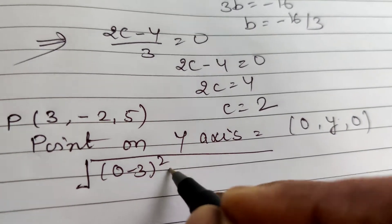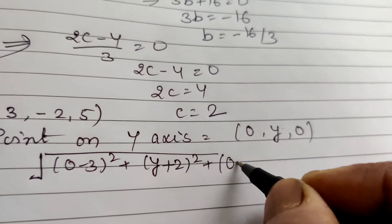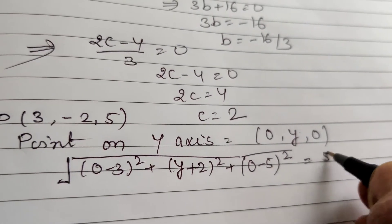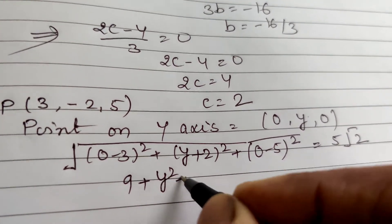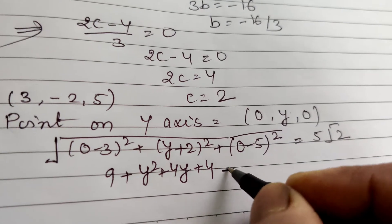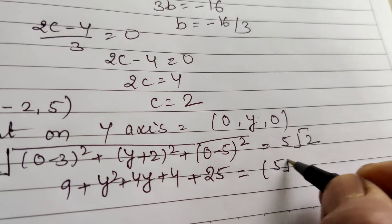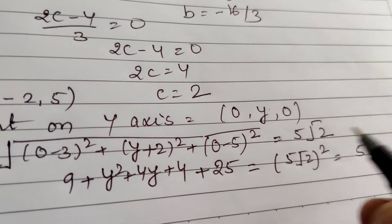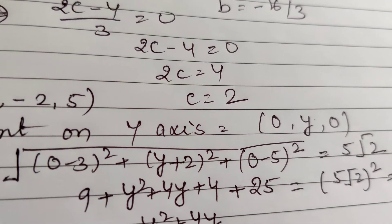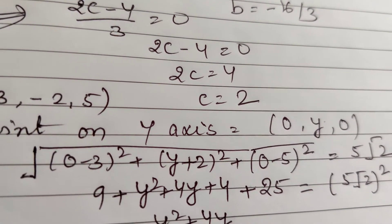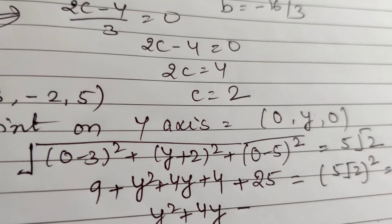Squaring both sides: 9 + (y+2)² + 25 = 50. Expanding: 9 + y² + 4y + 4 + 25 = 50. So y² + 4y + 38 = 50, which gives y² + 4y - 12 = 0.